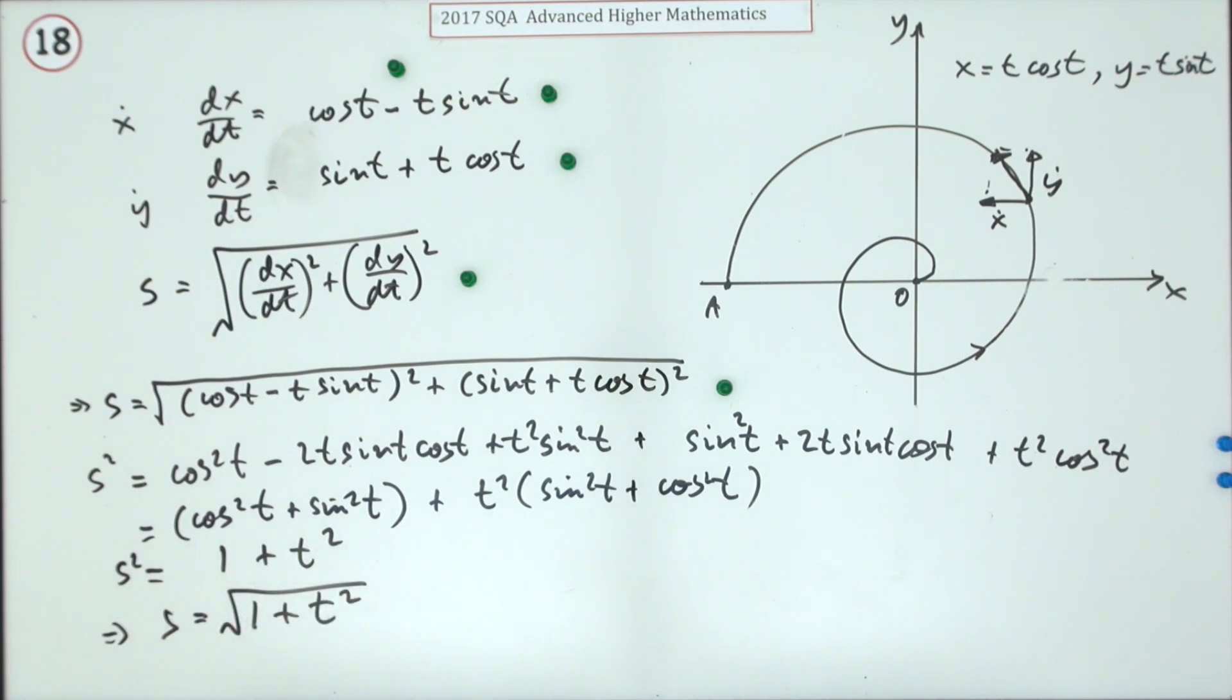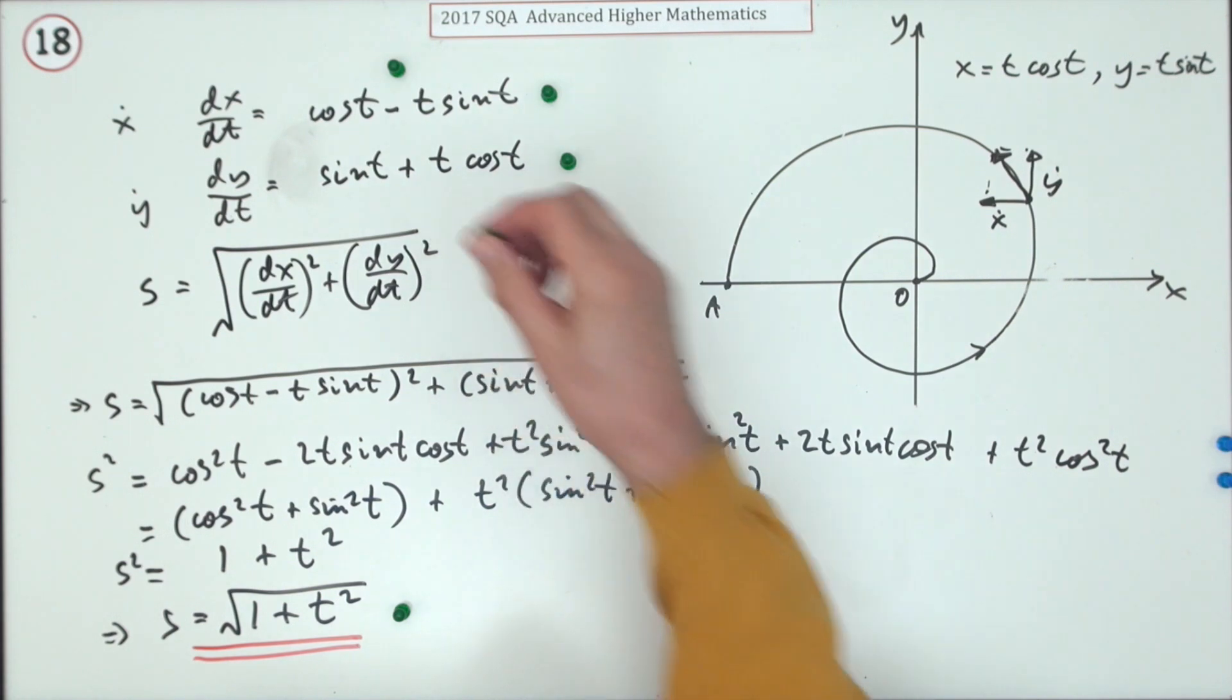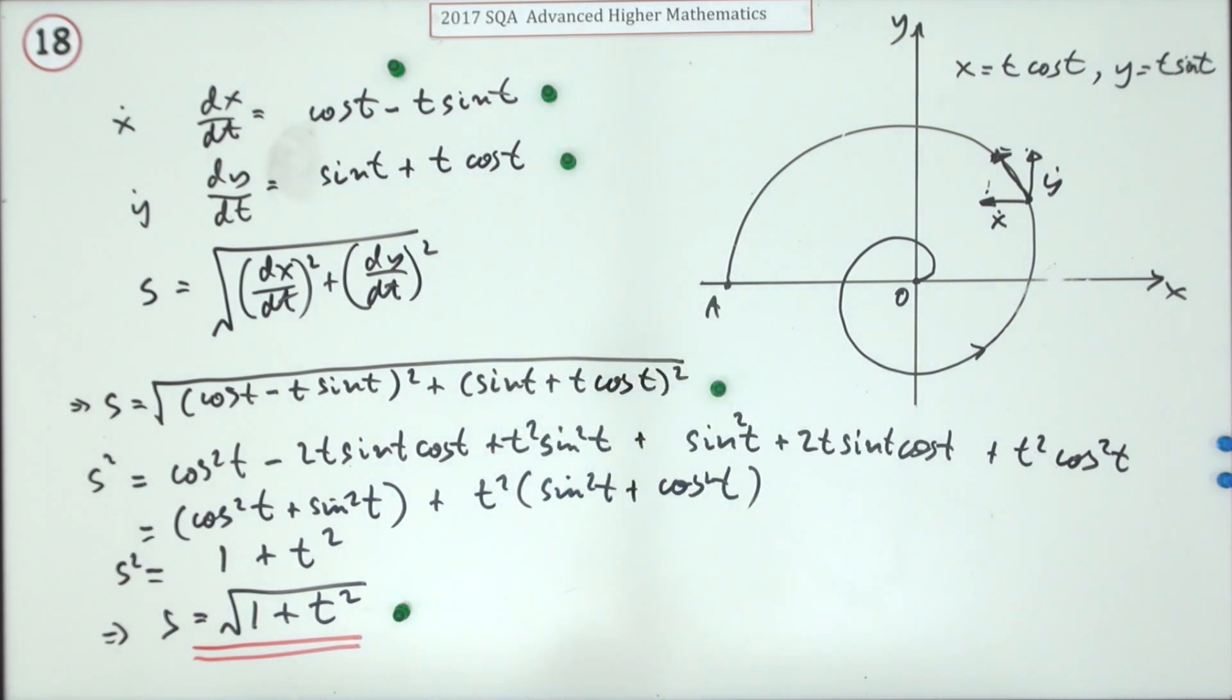Which means finally the expression for the instantaneous speed is the square root of 1 plus t squared. That's where the final mark should have been, and this mark should have been in here for putting that part into it.